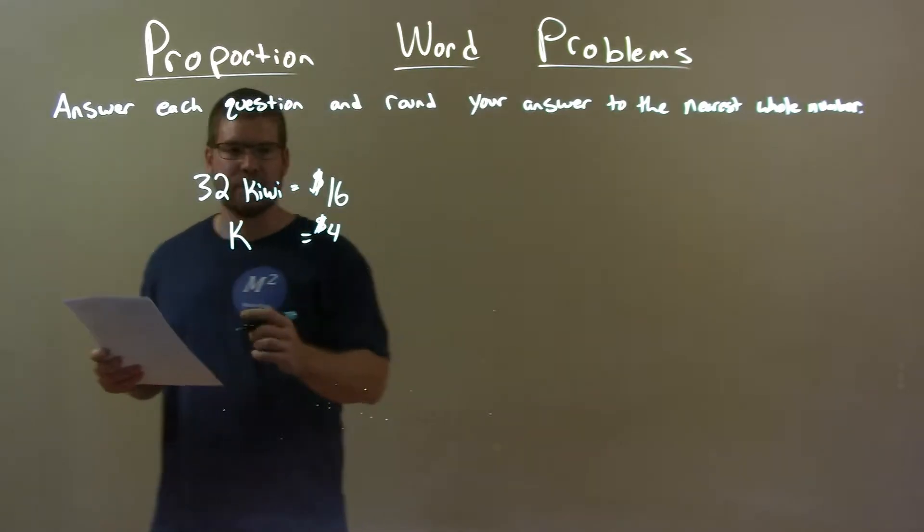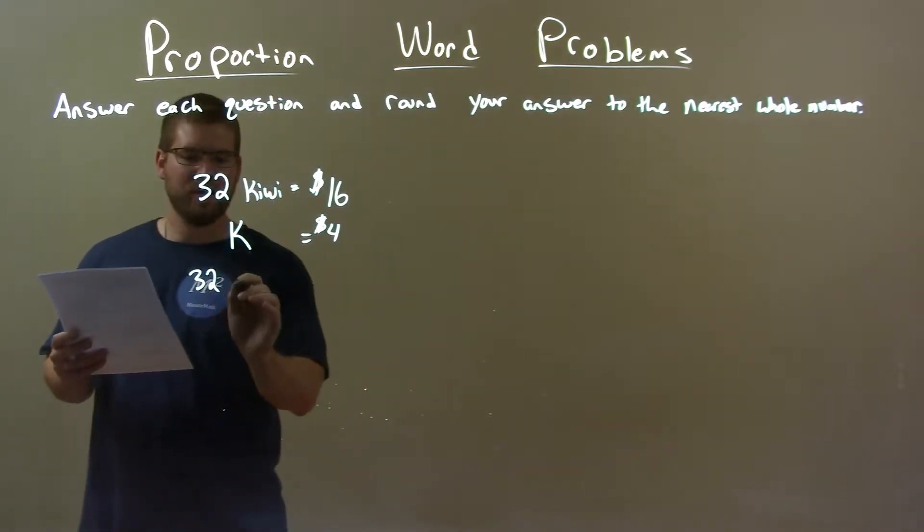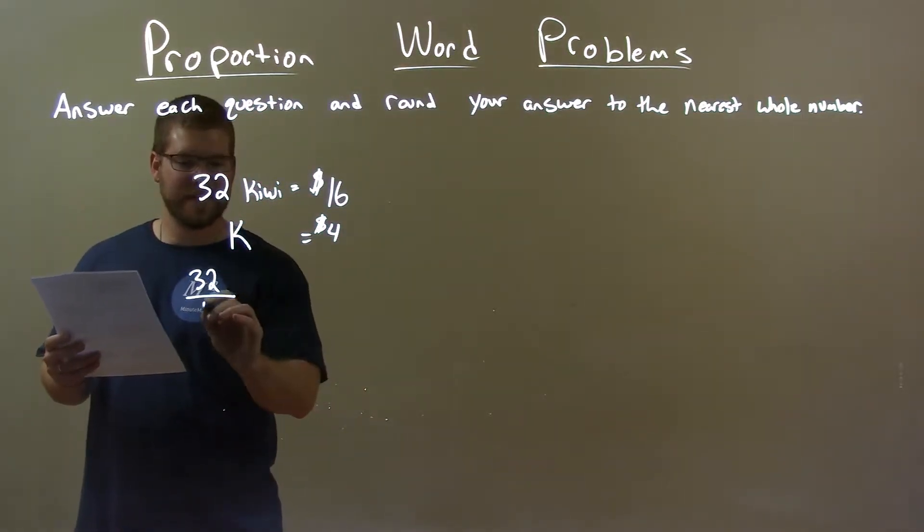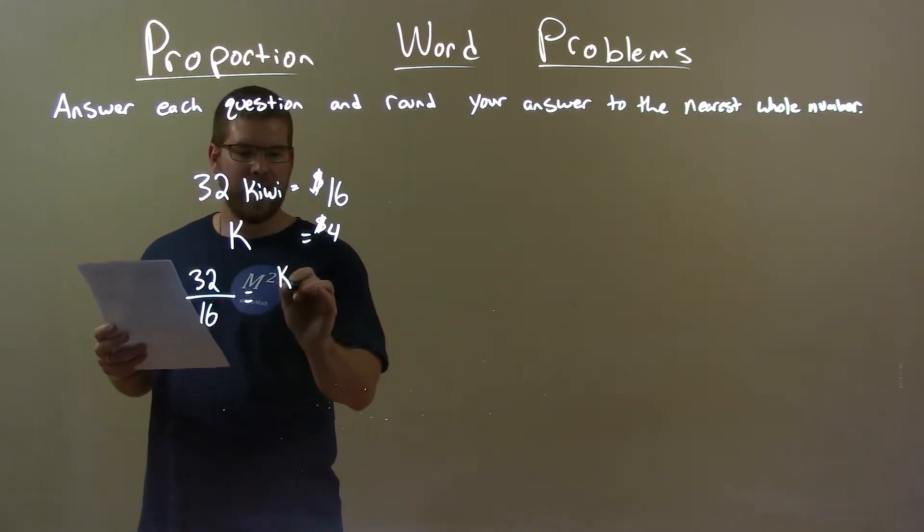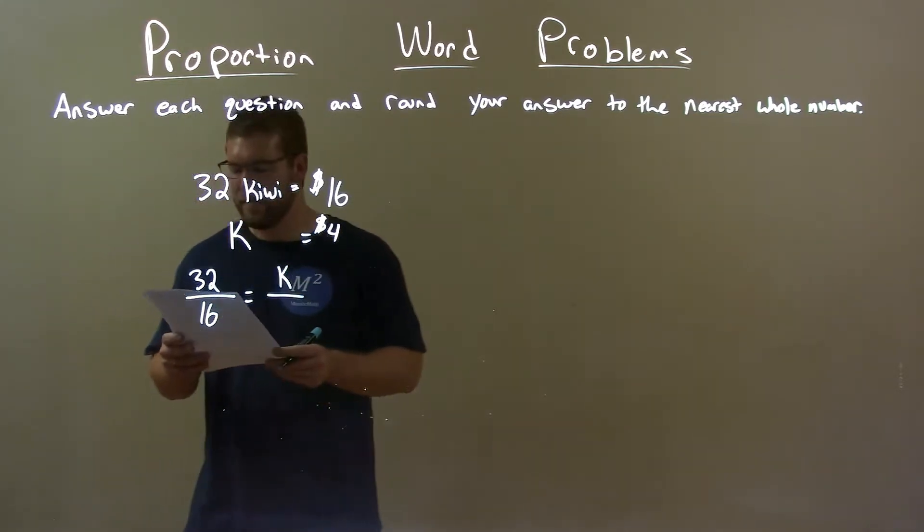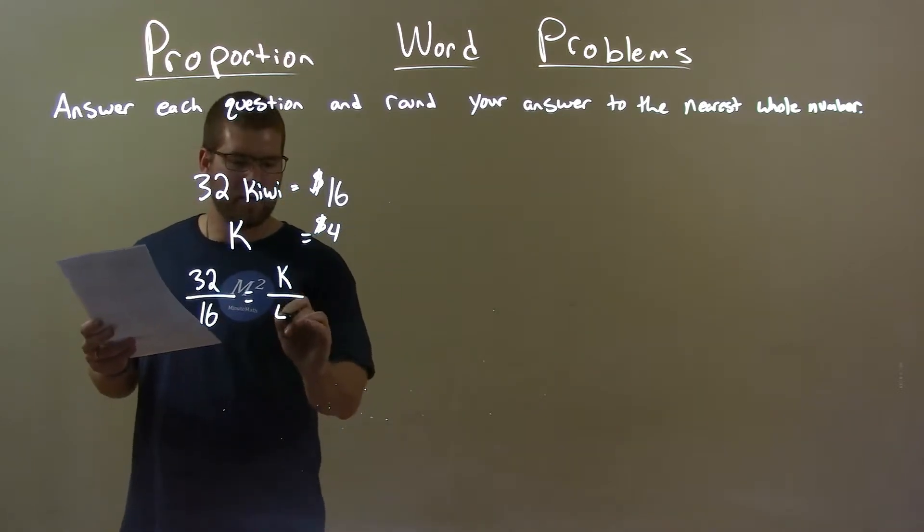Let's set up a proportion. 32 kiwis over $16 is equal to the letter k, number of kiwis that Lisa wants to get, for $4. Okay.